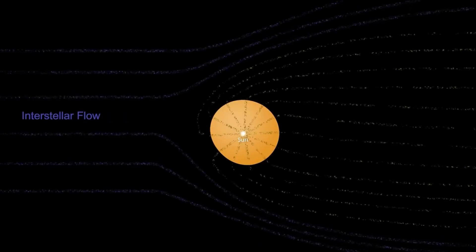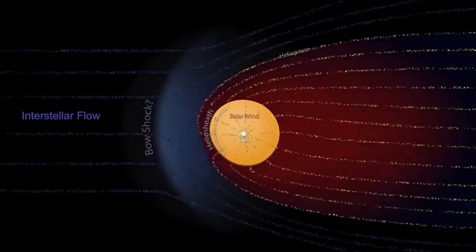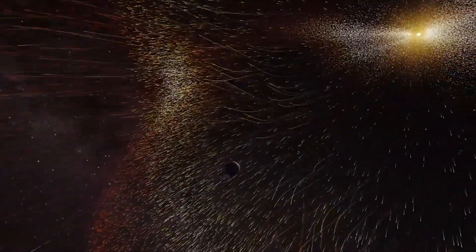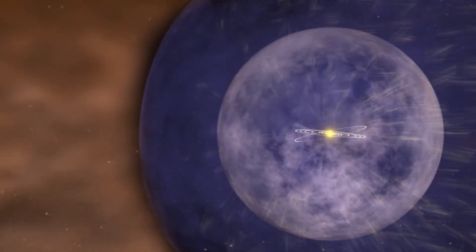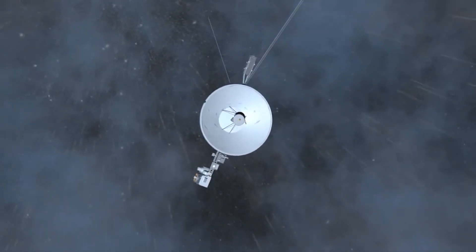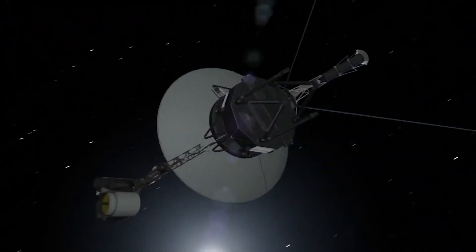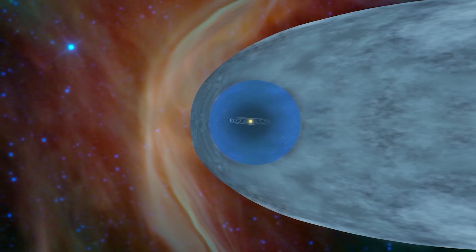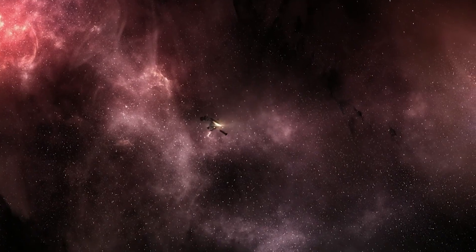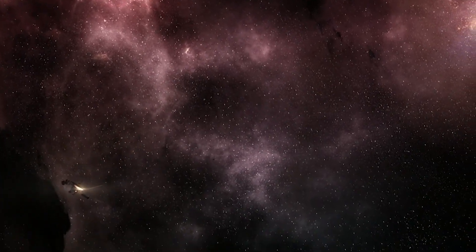Furthermore, there was a shift in the direction of the magnetic field, reflecting the altered influence of interstellar magnetic forces. Additionally, the presence of galactic cosmic rays, high-energy particles originating from distant cosmic sources, significantly increased. These cosmic rays become more prominent beyond the heliopause but start to appear in greater numbers just before reaching it. As the first of the twin spacecrafts to reach this momentous milestone, Voyager 1 provided humanity with its initial glimpse into the unexplored realms beyond the heliopause. It shed light on the enigmatic transition from the Sun's domain to the vast expanse of deep space.